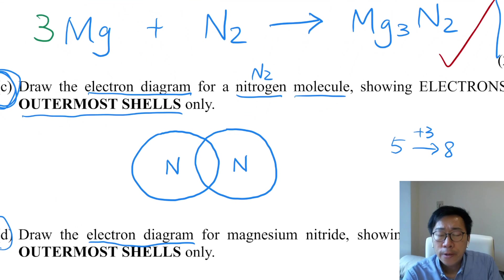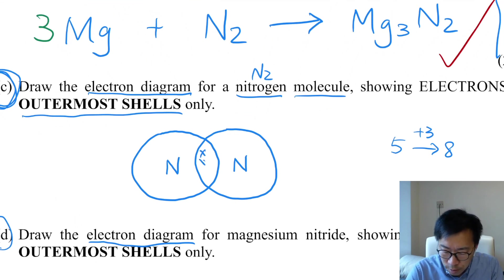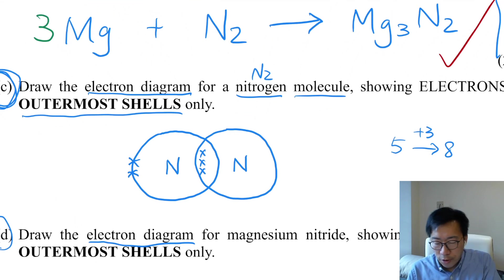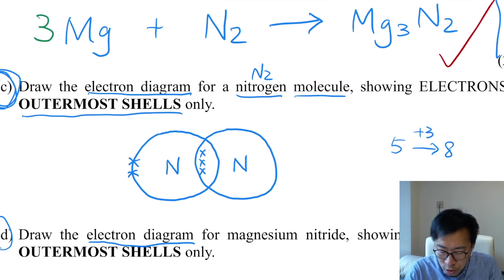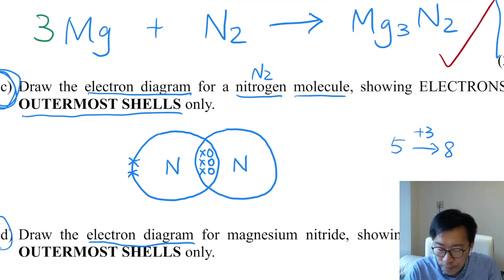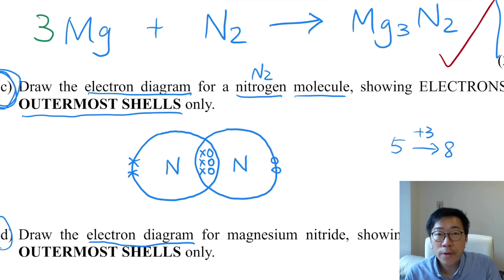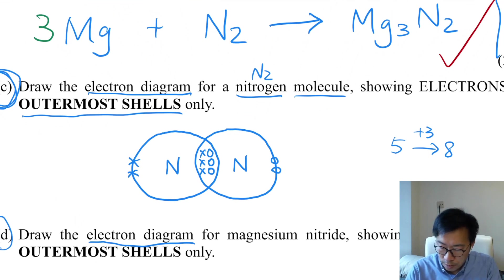Both nitrogen atoms share their electrons. If each needs 3 more electrons, it shares 3 electrons. The nitrogen atom on the left shares 3 electrons, so 2 electrons remain unshared. For the nitrogen atom on the right, similarly it shares 3 electrons, leaving 2 electrons unshared. By doing this, both nitrogen atoms attain the octet structure — 8 electrons in the outermost shell. This is the correct answer.